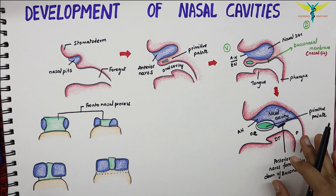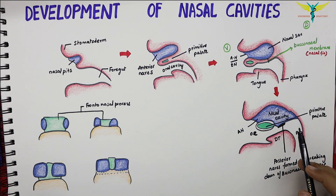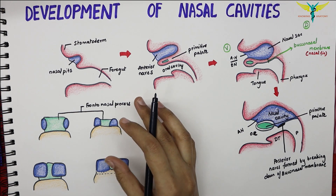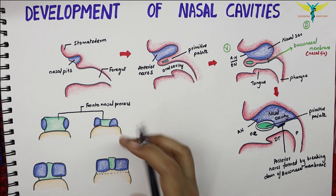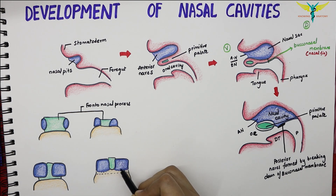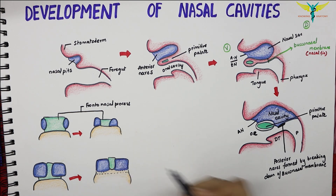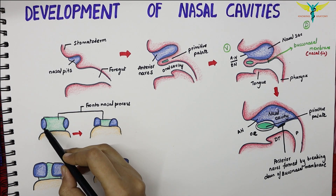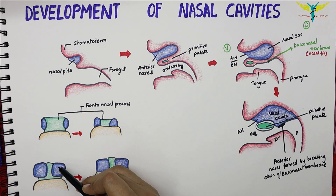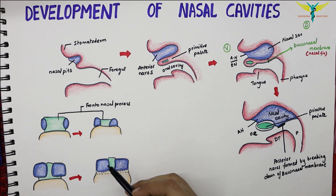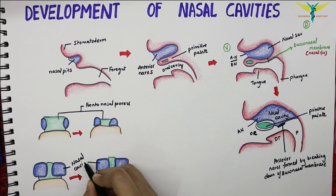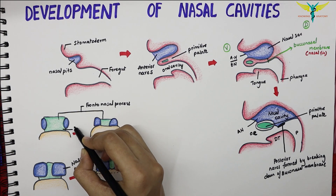The two nasal sacs are widely separated from one another by the frontonasal processes. Later, the frontonasal process becomes progressively narrower. This narrowing of the frontonasal processes leads to the enlargement of the nasal cavities and brings them closer together, as seen in the diagram. The green color represents the primitive palate.